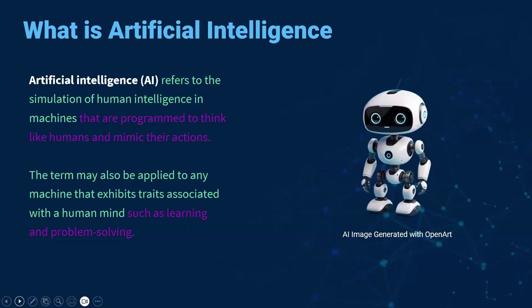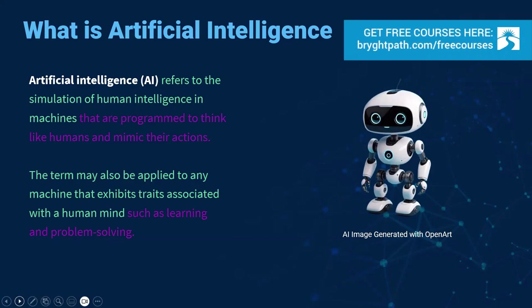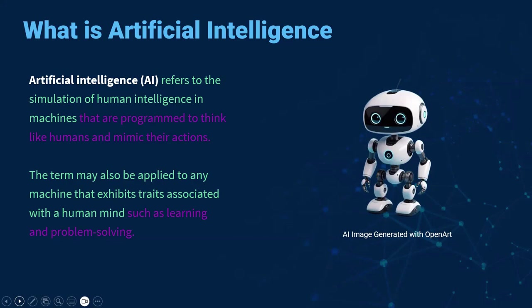To level set on what is artificial intelligence: the definition of AI refers to the simulation of human intelligence in machines, and those machines are programmed to think like humans and mimic their actions. The term may also be applied to any machine that exhibits traits associated with the human mind, such as learning and problem solving. An example of how you can use AI is the picture here of the little robot — I used OpenArt, which is an open source AI image generator, and put in a prompt to create a cute AI robot, and it generated this image for our presentation.